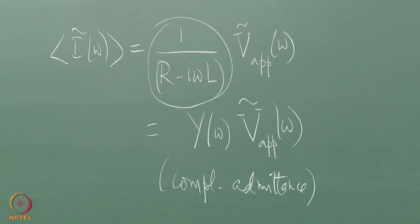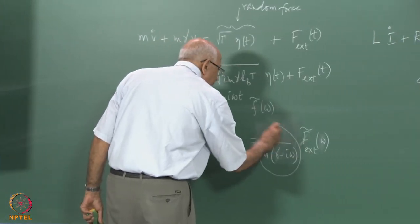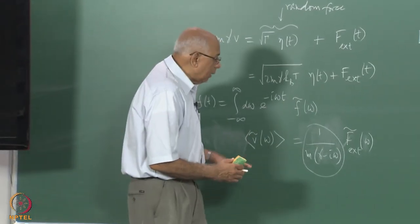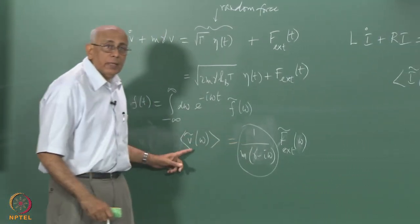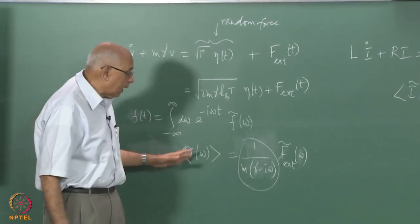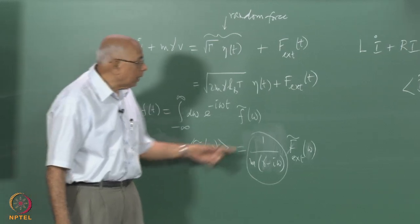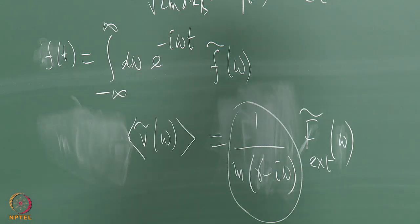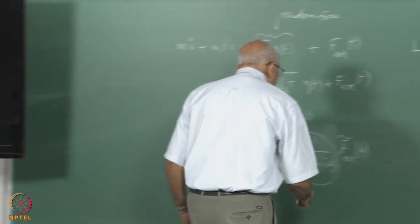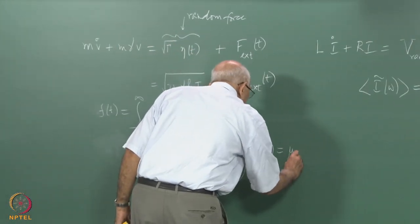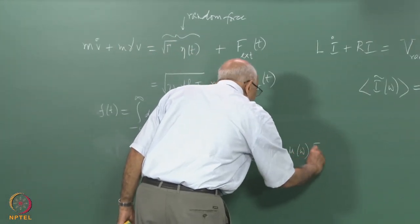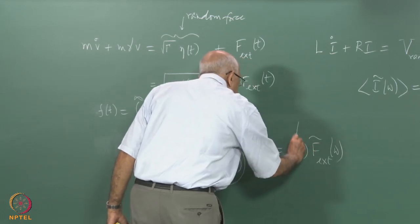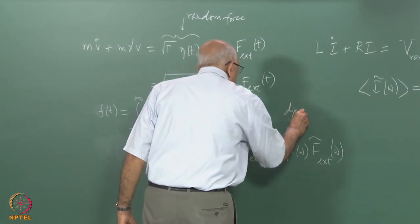Exactly similarly, this quantity for the mechanical system is called the dynamic mobility, because it measures what the average velocity component at frequency ω is per unit applied amplitude at frequency ω. So by definition this equals μ(ω) times f̃_external(ω), and this quantity is called the dynamic mobility.